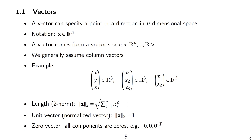For notation, we generally assume column vectors. You see that these vectors are given as columns: X, Y, Z — this is often used when describing three-dimensional points in space. For extensions to higher dimensions, it is better to denote the individual components of a vector bold X as X1, X2, X3 up to Xn.